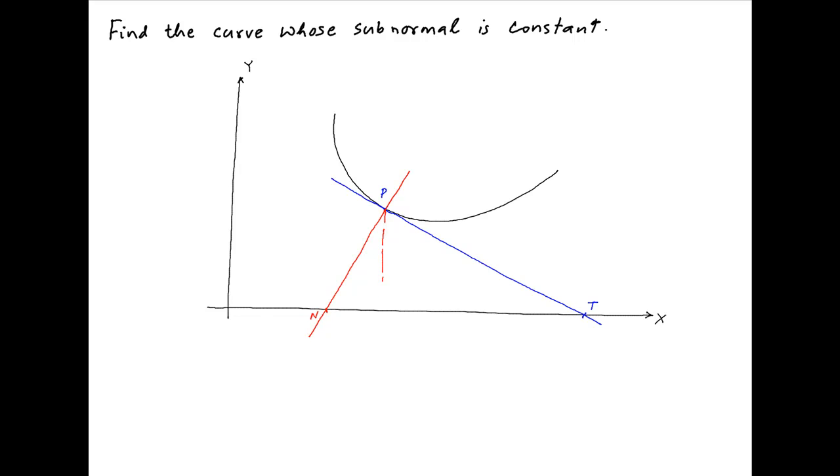Now drop a perpendicular from p onto the x-axis and let's assume that the foot of the perpendicular is k. If the coordinates of p are xy, then pk is equal to the ordinate y.